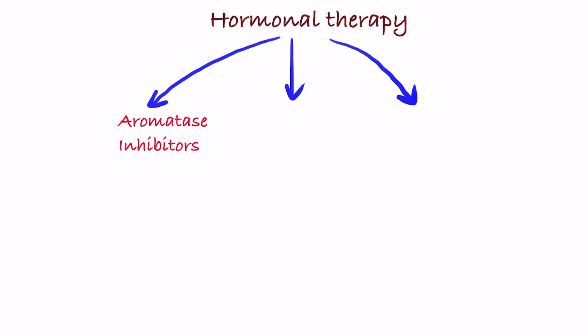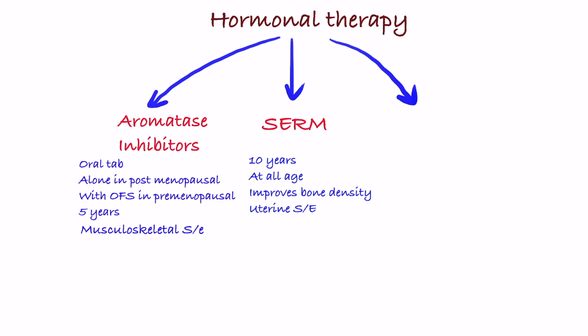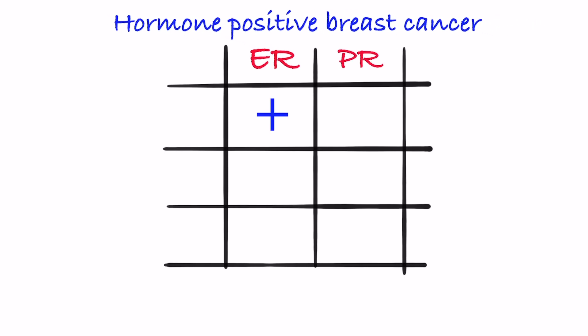In summary, hormonal therapies in breast cancer include: aromatase inhibitors, which are oral tablets combined with ovarian function suppression in premenopausal women, given for five years, with main side effects of musculoskeletal myalgia and osteoporosis. SERMs are given for 10 years in oral form at all ages — they increase bone density but have uterine side effects. SERDs are first-line drugs available in injectable form and are effective in tamoxifen-resistant cases.